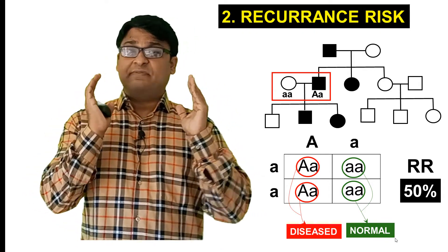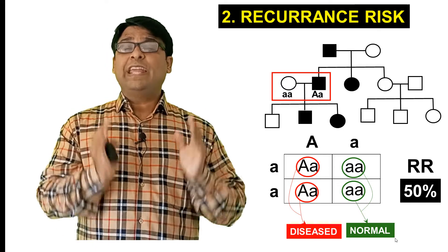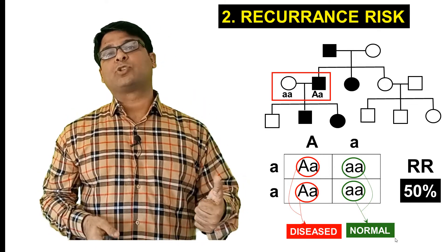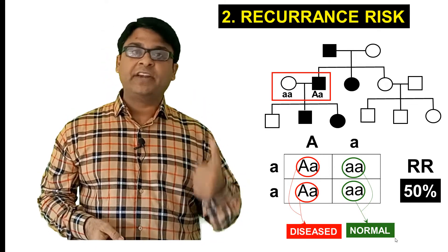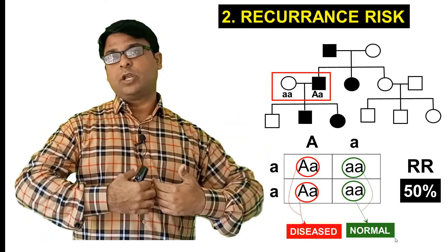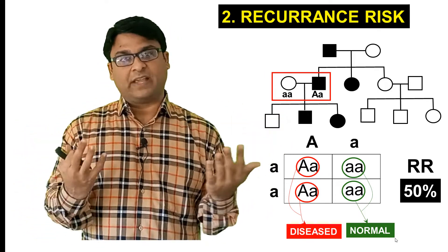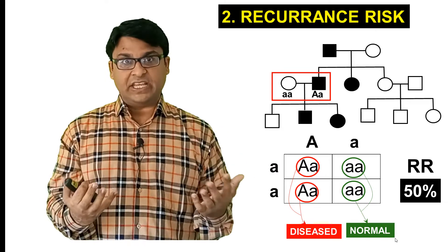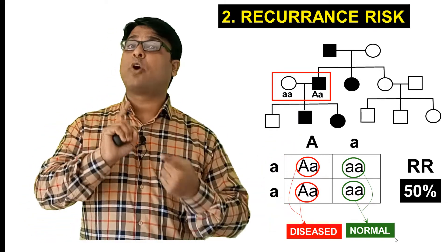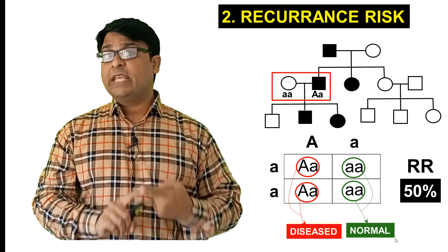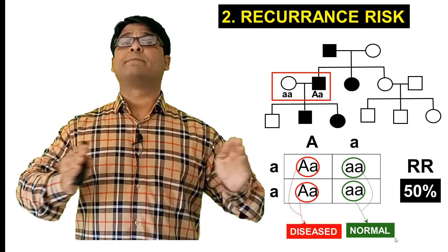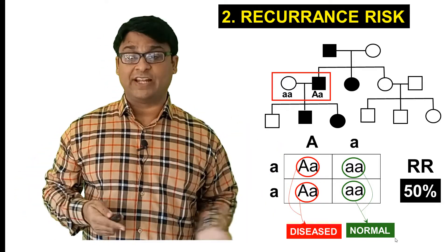This is very easy to solve, only if you know the Punnett square rules for autosomal dominant disorders. Then you can do it like a piece of cake. Please watch video number one and each subsequent video to understand the whole spectrum of medical genetics.